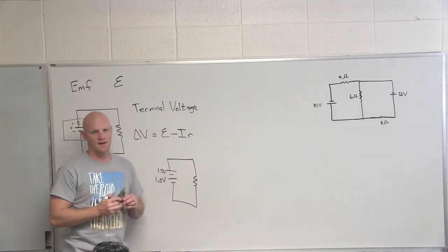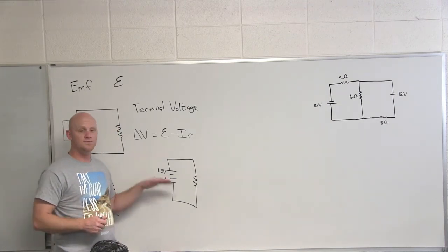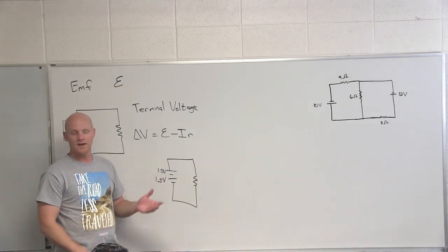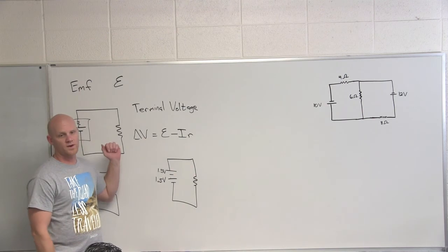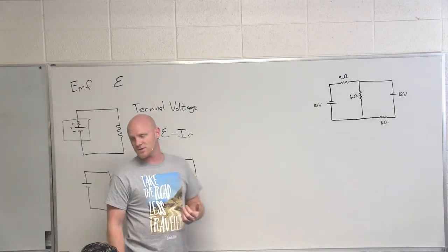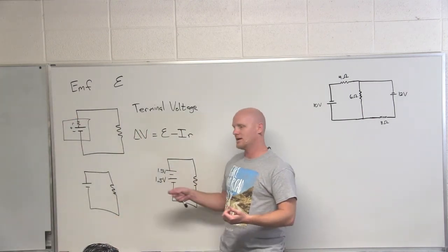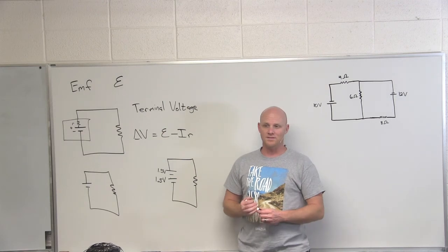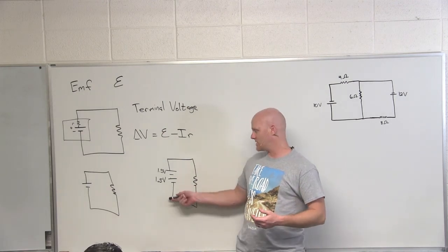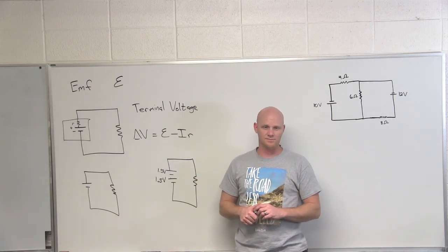And if I need four and a half volts, I put another one in series. So the thing here is that sources of EMF, these batteries in this case, are additive when in series. So put as many as you want in series and the potential just keeps growing.